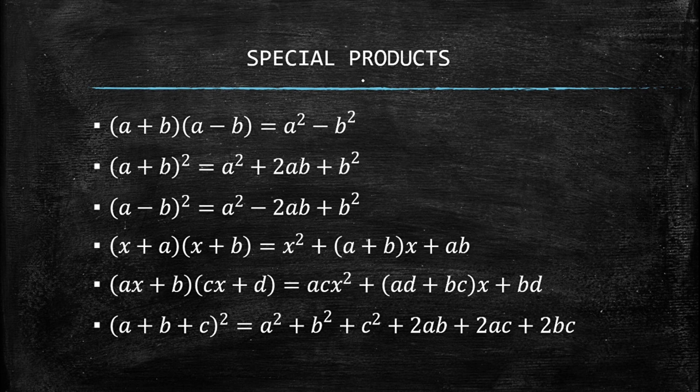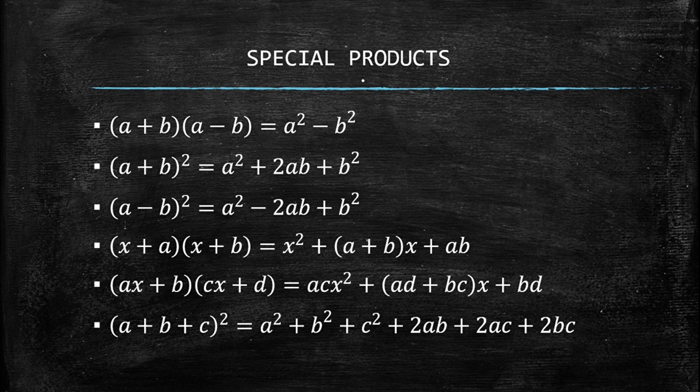Next, (x + a)(x + b) equals x² + (a + b)x + ab. After that, (ax + b)(cx + d) equals acx² + (ad + bc)x + bd. And finally, (a + b + c)² equals a² + b² + c² + 2ab + 2ac + 2bc.